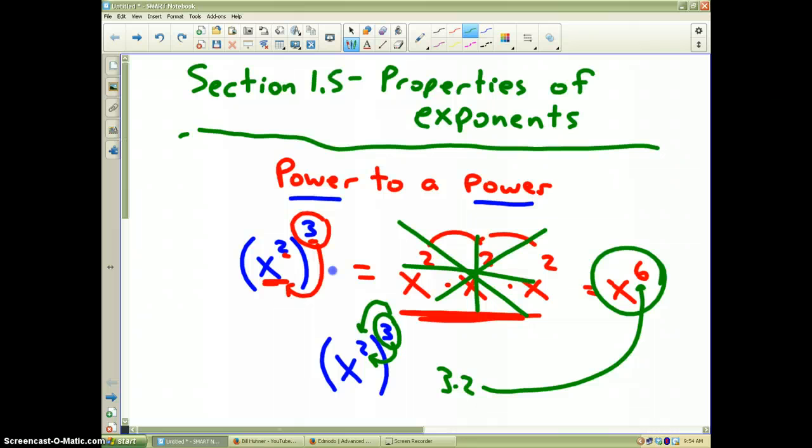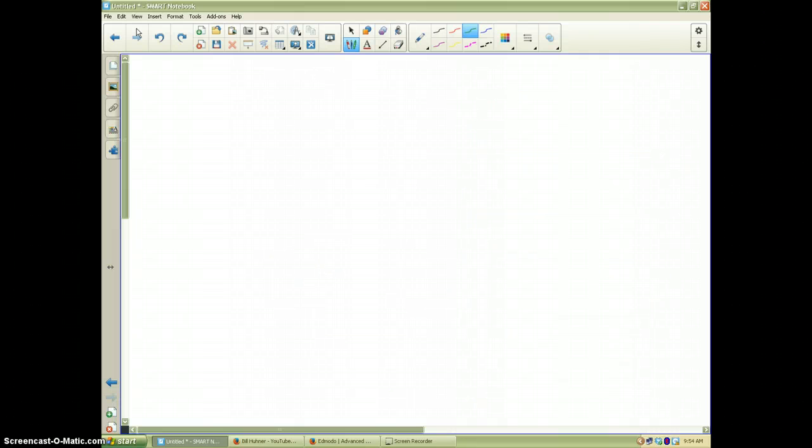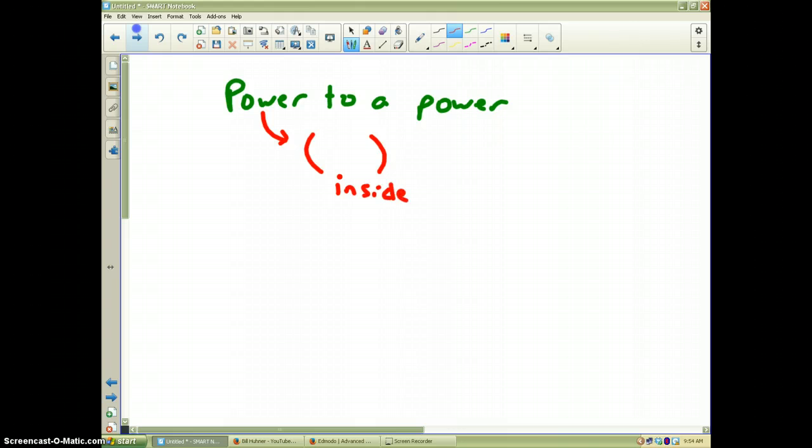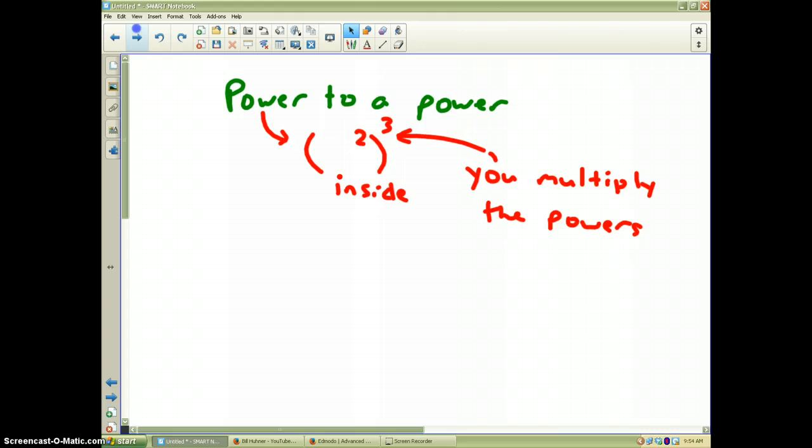I'm going to clear this whiteboard for you. When you have a power to a power and the first power is inside the parentheses, you multiply the powers. Three times two. I'll leave that up on the whiteboard for you.